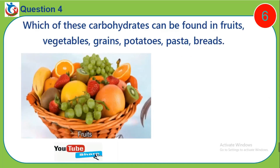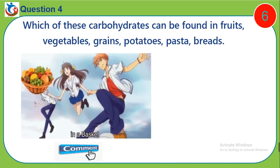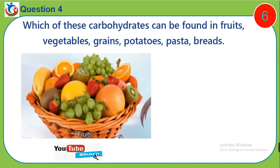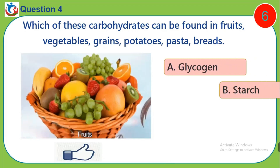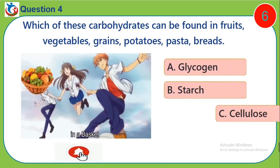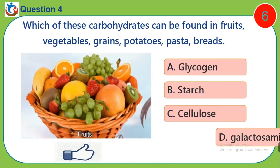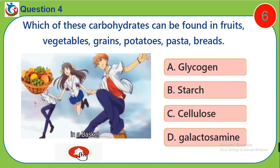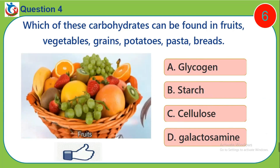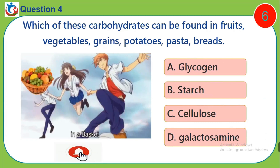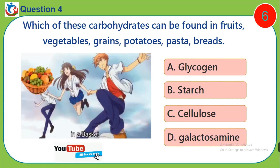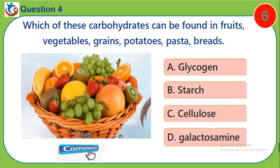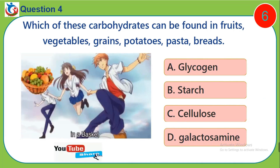Question 4. Which of these carbohydrates can be found in fruits, vegetables, grains, potatoes, pasta, breads? A. Glycogen, B. Starch, C. Cellulose, D. Galactosamine.